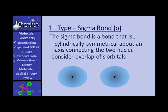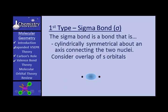Let's look at the overlap of two S orbitals — say, two hydrogen atoms. The atoms approach each other, they collide, they overlap, and they form a bond. That is the sigma bond — a bond that is cylindrically symmetrical about an axis connecting the two nuclei. The atoms collide, those orbitals overlap, there's an area of reduced energy mostly between the two nuclei, and that is a sigma bond.